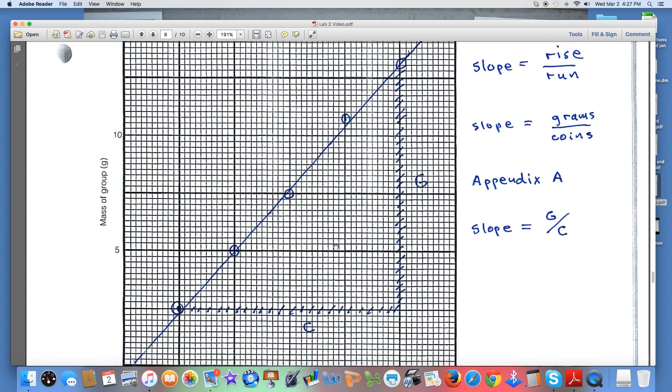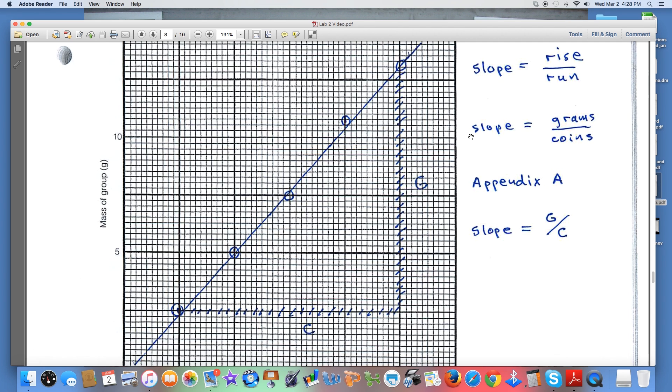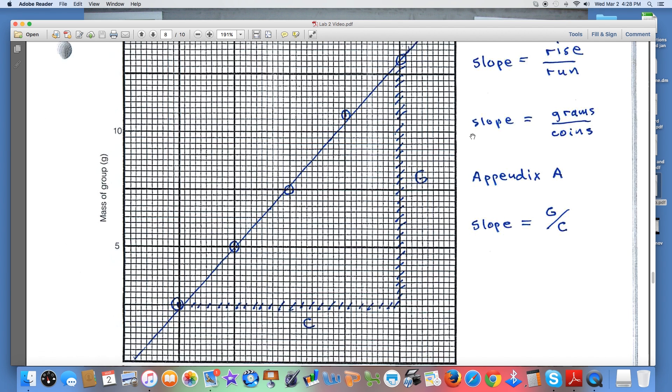The slope you may have memorized is equal to the rise over the run, or in this case it would be the grams over the number of coins. So if we calculate this distance and divide it by this distance, we'll have the slope of the graph. The slope is what you would record on that data blank. It would give you the graphical average coin mass.